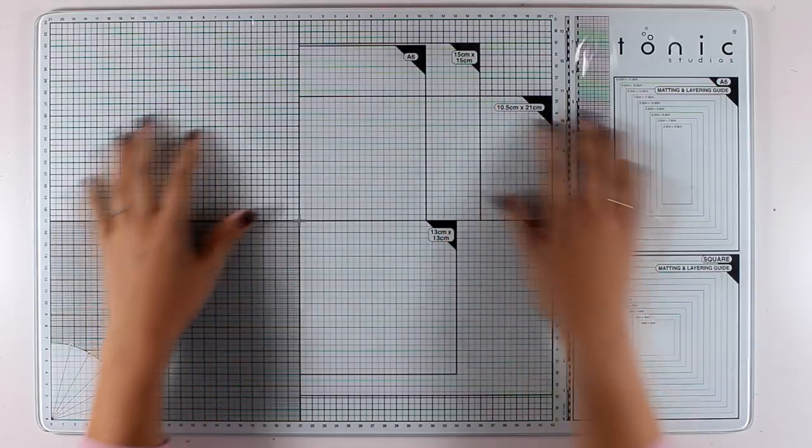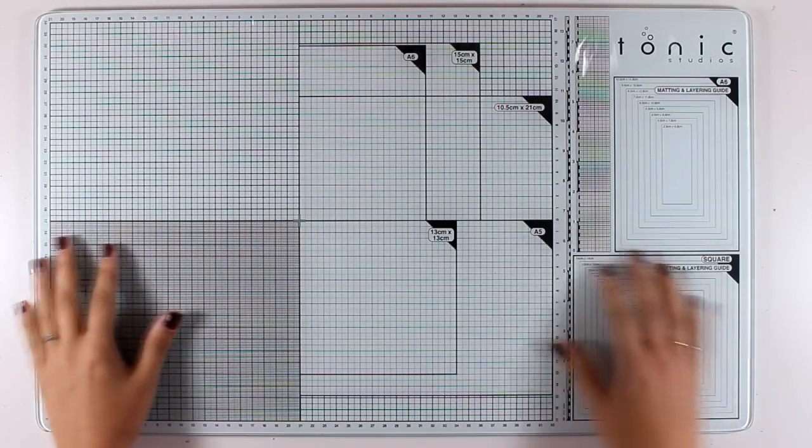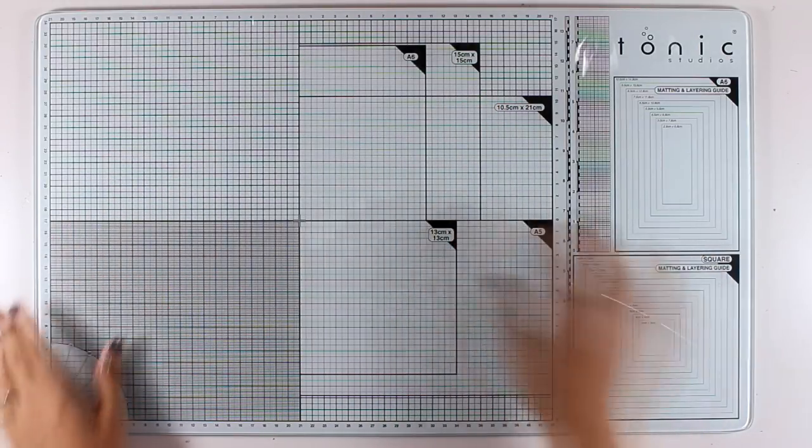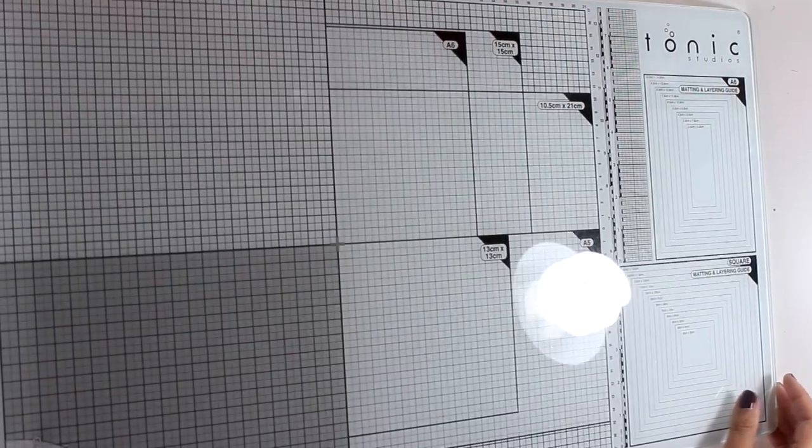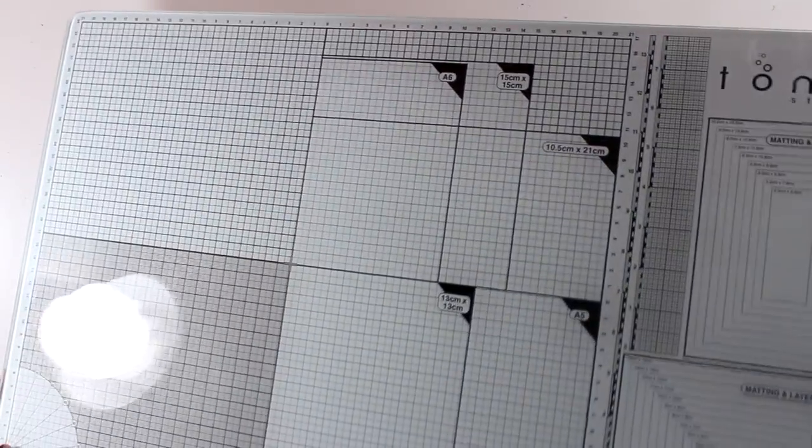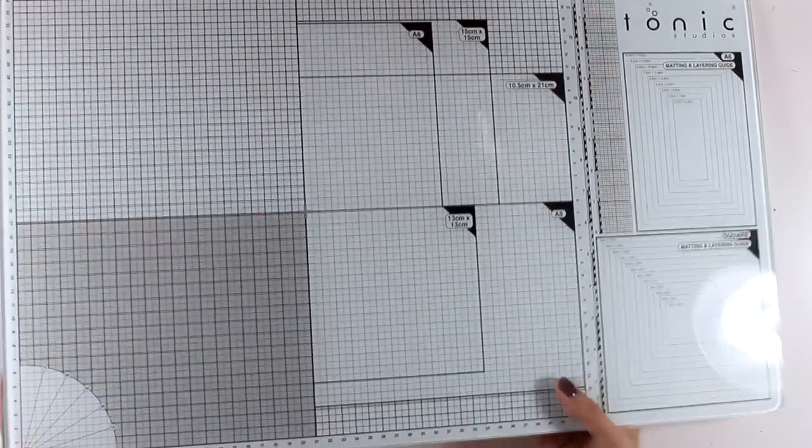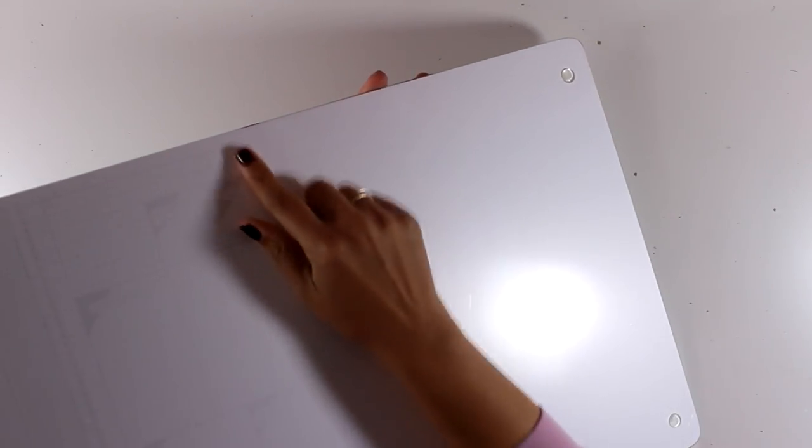Now the one that I'm using is by Tonic Studios and you can see it has different areas to work on and measure things out, but I'll talk about it later. This is tempered glass, which means it's very tough and feels really heavy. It's very sturdy and there are plastic feet underneath, so when I place it on top of my surface, no matter what I do on top, it doesn't move on me.